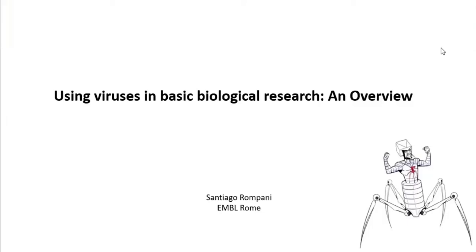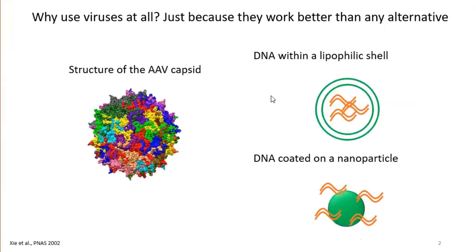Today we'll talk about viruses — not focusing on what they do in the wild, but how we as biologists use them as tools, mostly to deliver genetic information to cells. Why not use something more sterile and controlled, like lipid complexes or nanoparticles? The short answer is that viruses just work better, likely because they've evolved over millions of years to deliver DNA and RNA to cells that don't want this delivery to happen.